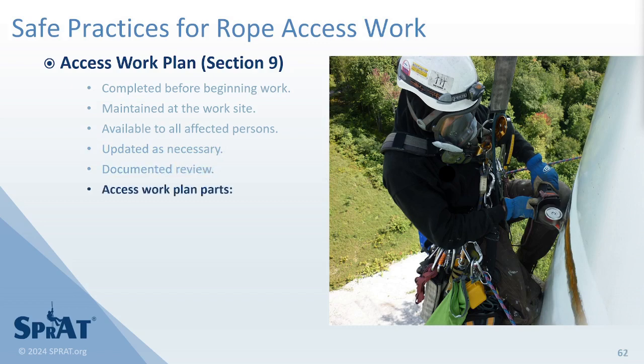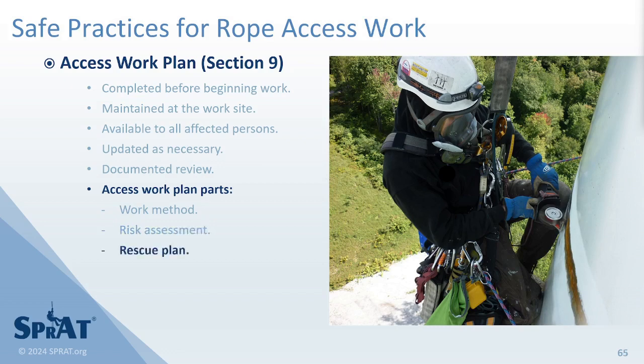The access work plan consists of at least three parts: the work method, which details the rope access systems, tools, work equipment, and more required for completing the work; the risk assessment, which identifies hazards and risks associated with the work method and work environment and identifies controls to ensure risk is reduced to an acceptable level; and the rescue plan, which establishes procedures to ensure prompt rescue.